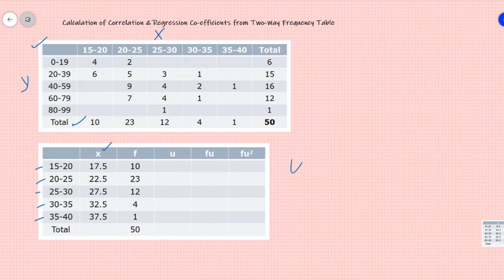Now let u equals x minus 27.5, the assumed mean, by 5 since the class interval is 5 units. So the u column values would be 0, minus 1, minus 2, 1 and 2. We know how we are calculating this. Like for 17.5 it would be 17.5 minus 27.5 that is minus 10, minus 10 by 5 will give you minus 2 and so forth.